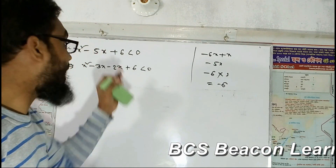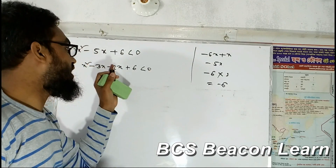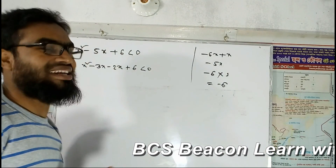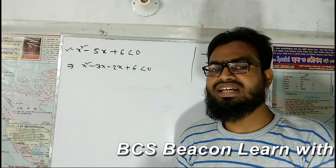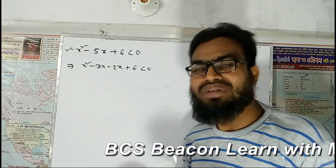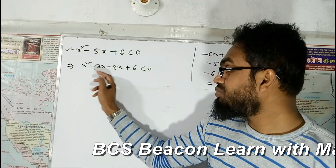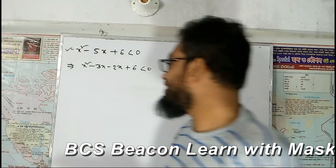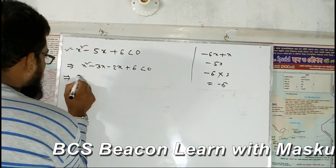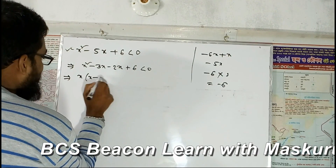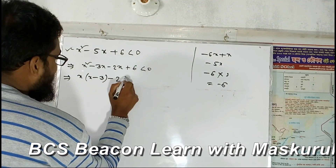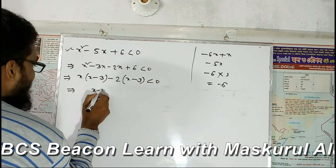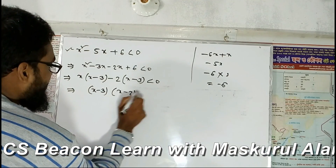So we have to consider those values for which we will get real factors. We take minus 2x, and from here we get x minus 3. Taking minus 2, we get x minus 2. So we are getting x minus 3 and x minus 2, with the product less than zero.